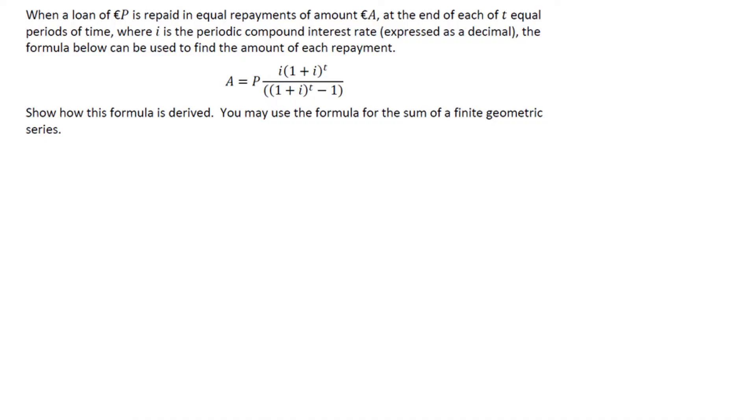When a loan P, so that's our total amount, is repaid in equal repayments of amount A at the end of T equal periods of time, I is the period of compound interest rate expressed as a decimal.